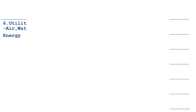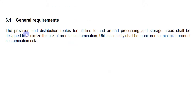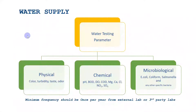The general requirement is a summary of all other five subclauses. If you are complying with all other five clauses, then you are automatically complying with the 6.1 general requirement. So let's go to sub-clause 6.2, which is water supply. Instead of reading all the paragraph text, I have made some bullet points that will make it easier to understand this clause.